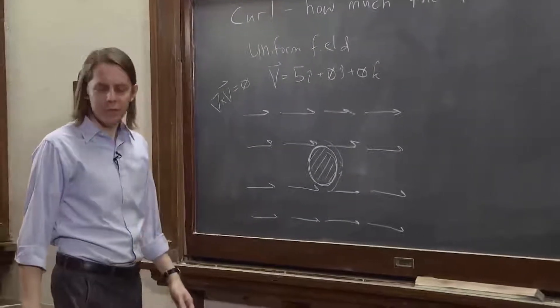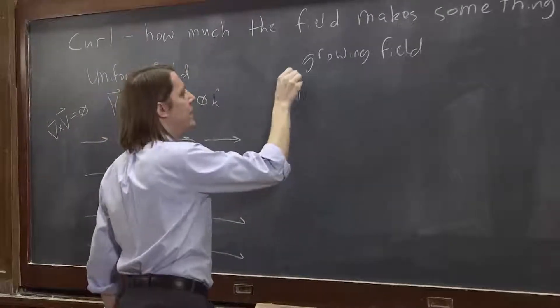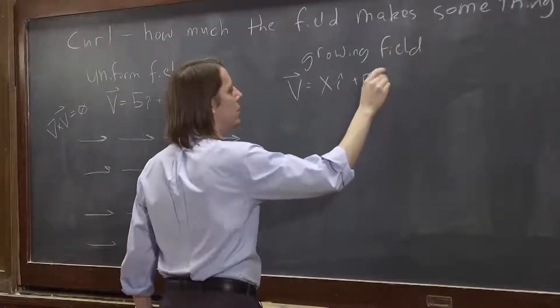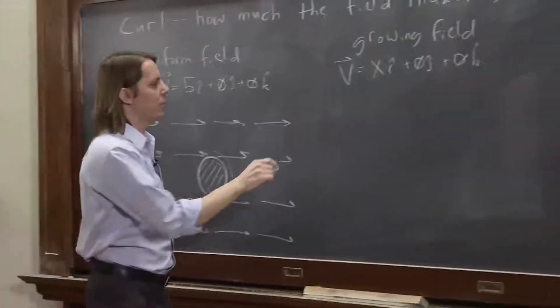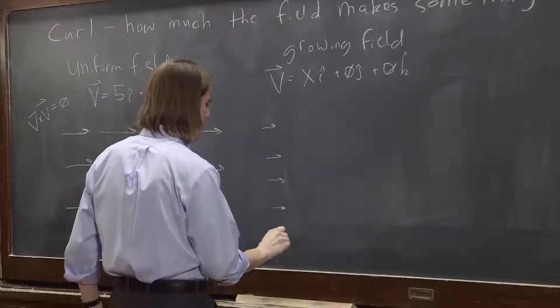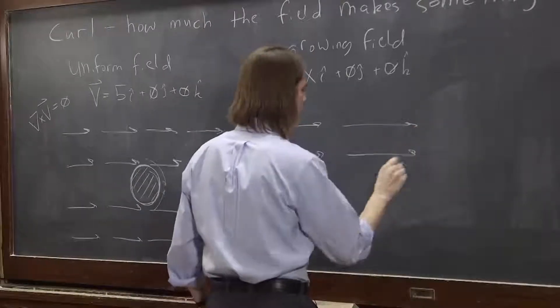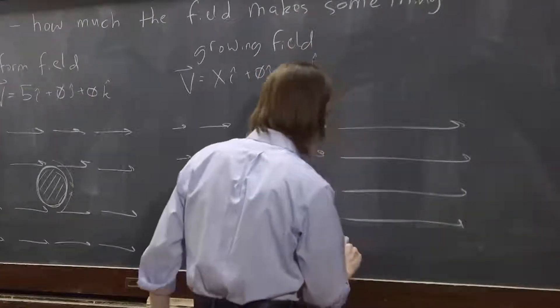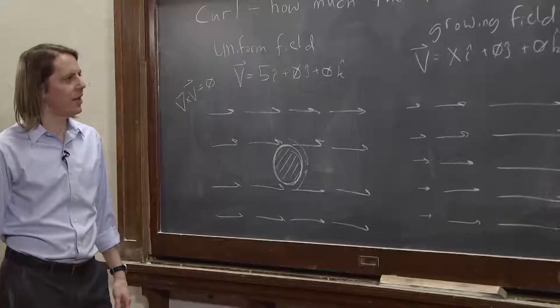So let's look at one that's not uniform. Let's look at a growing field. So let's see, let's have v equal, let's let it be some x, let's just let it be x on the i-hat plus zero on the j-hat plus zero k-hat. So instead of five, it's going to increase. We're going to have short vectors here. All small vectors where x is small. And then they get bigger as you move to the right. And they get even bigger as you move farther. They're just increasing with x. And they're doing it linearly. So there it is, a growing field to the right. The field x i-hat plus zero plus zero.